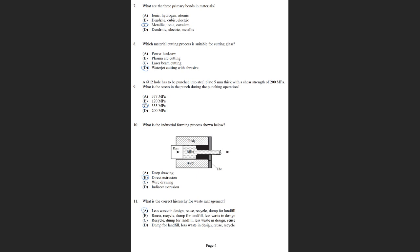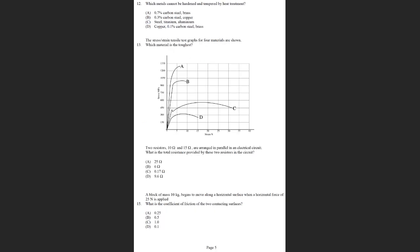Question 12, which metals cannot be hardened and tempered by heat treatment? 0.7% carbon can be hardened and tempered. 0.3% carbon can be hardened and tempered. Anything below 0.3, very difficult to harden and temper. Copper can't be hardened by heat treatment, and 0.1% carbon steel can't be hardened. The only way these three materials can be hardened is by work hardening. So D is the answer.